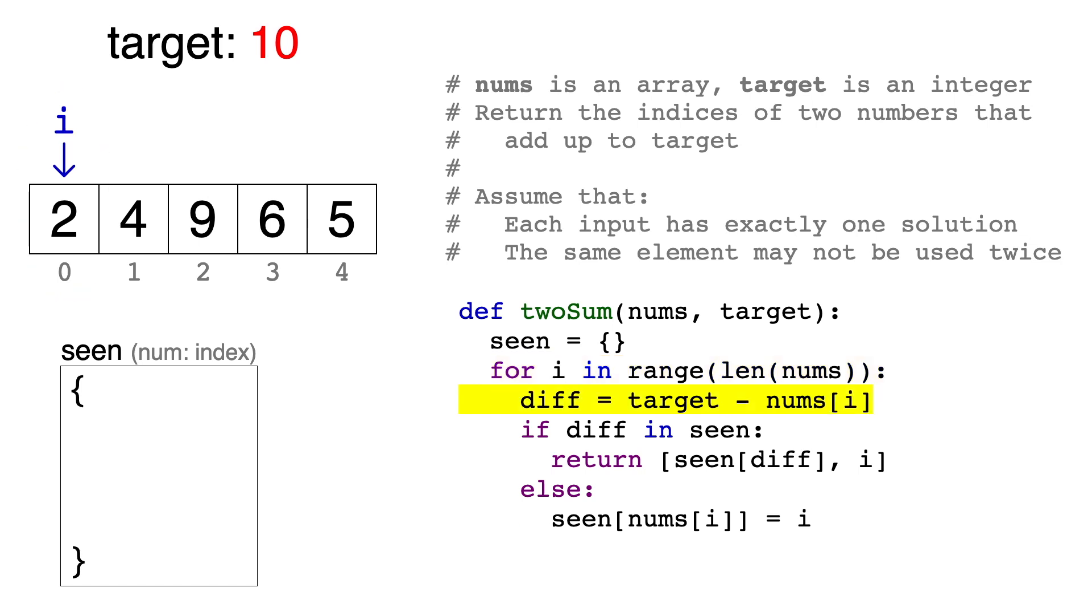We then subtract 2 from the target, 10, and store the result in a variable called diff, since it's the difference. 10 minus 2 equals 8, so we know that 8 is the only number that will equal 10 when added to 2. The next line checks if diff is a key in the dictionary seen.